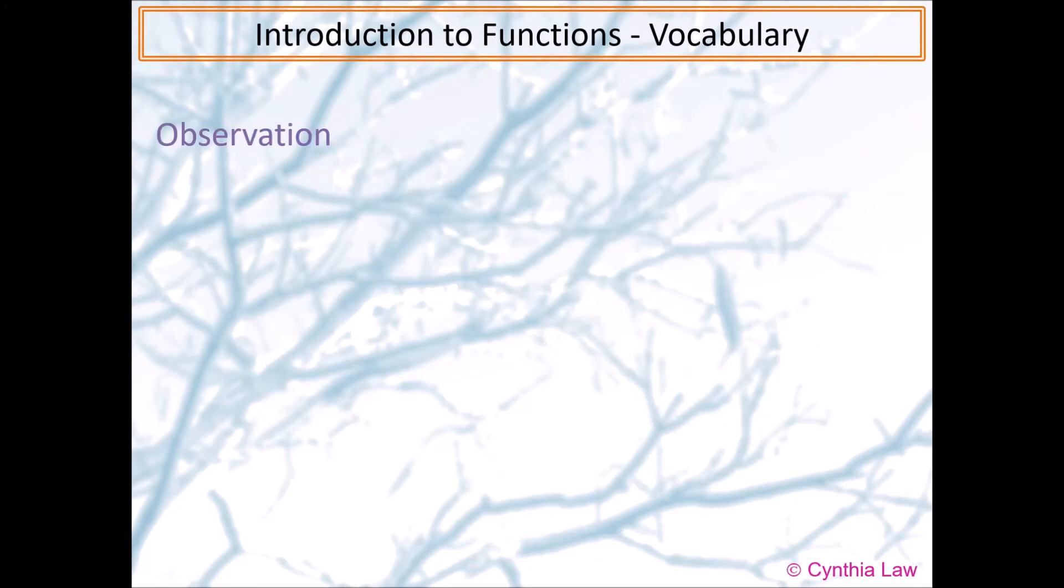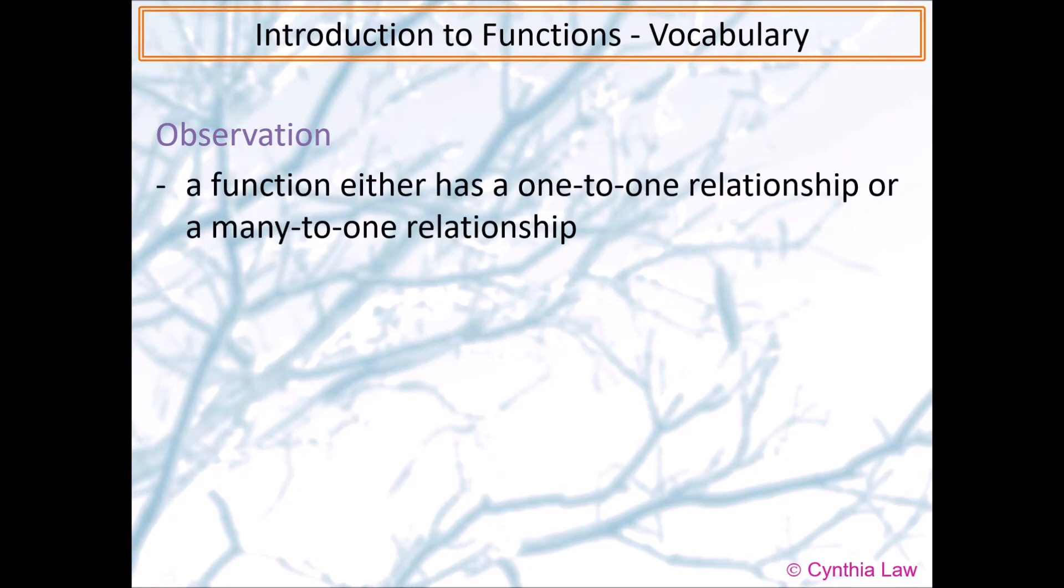What do we notice? We have three different types of relationships, and two of them are functions. So a function either has a one-to-one relationship or a many-to-one relationship. And when we have a one-to-many relationship, it is not a function and we just call it as a relation.